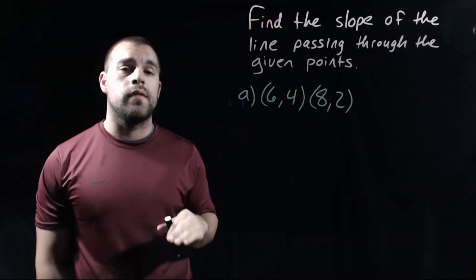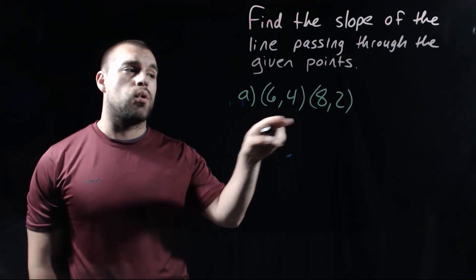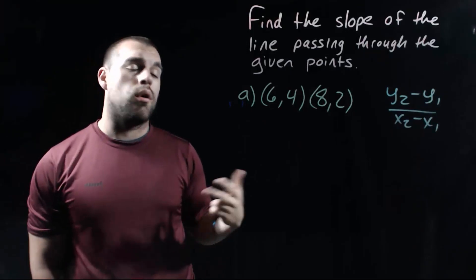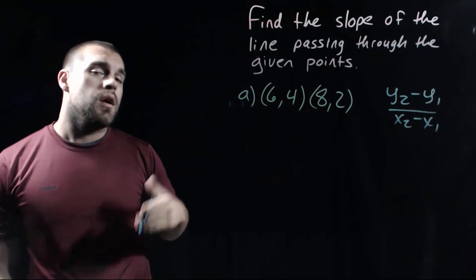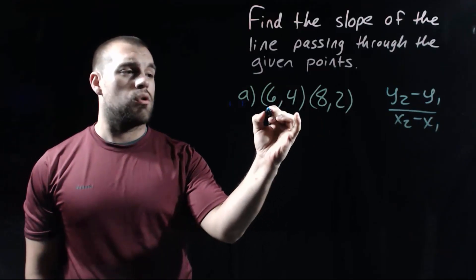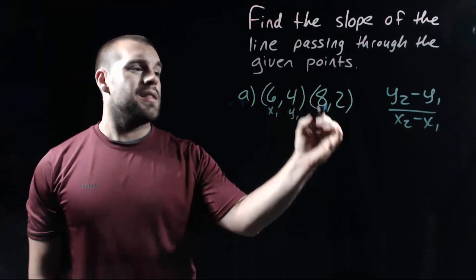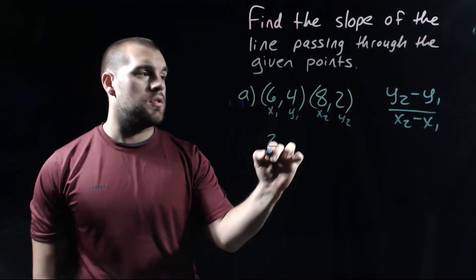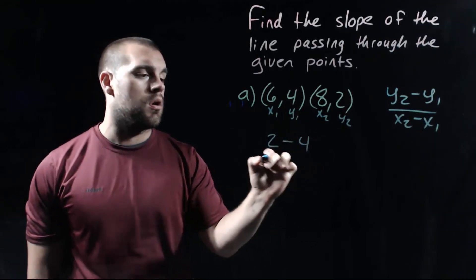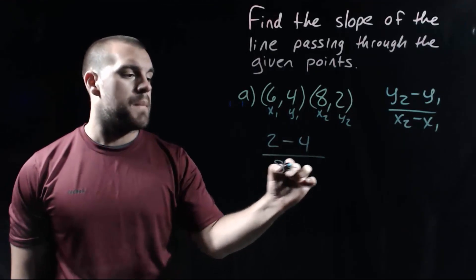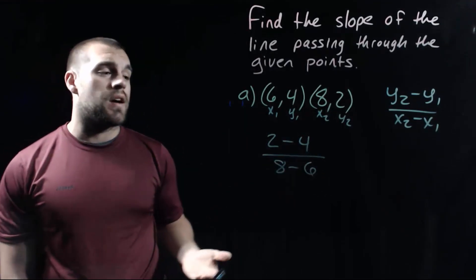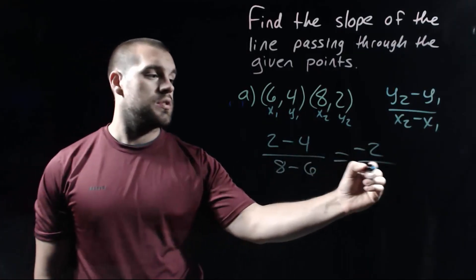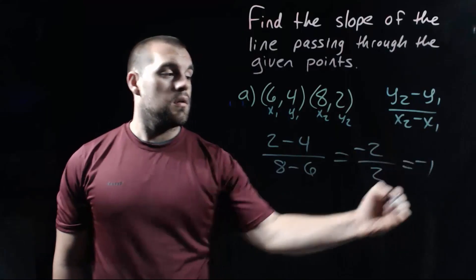In this example, we're going to find the slope of the line passing through the given points. We're given the points (6, 4) and (8, 2), and we're going to use the formula y2 minus y1 over x2 minus x1. I'll label the first ordered pair as x1 and y1, and the second as x2 and y2. Plugging in: y2 is 2, minus y1 which is 4, over x2 which is 8, minus x1 which is 6. On top, 2 minus 4 is negative 2. On bottom, 8 minus 6 is 2. Negative 2 divided by 2 gives us a slope of negative 1.